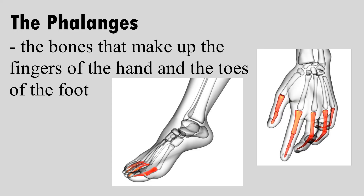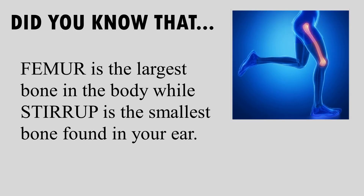The phalanges are the bones that make up the fingers of the hand and the toes of the foot. Did you know that the femur is the largest bone in the body, while the stirrup is the smallest bone, found in your ear?